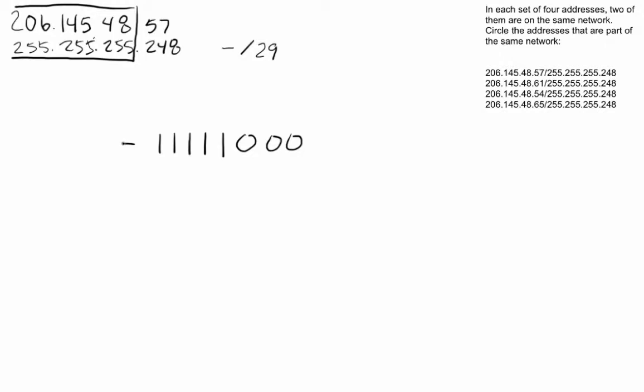So here is the 248 that we just broke out into binary. Now what we need to do is we need to take our number 57 and break it out into binary. So let's do the math over here. We're going to start with 57. I can't get 128 out of there, so let's make that a 0. And I can't get a 64 out of there, it's too big. But I can get a 32 out of there. So if I subtract 32, I end up with 25.